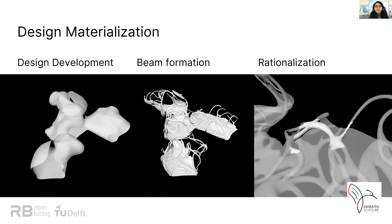To have a quick overview of the generation of the beams: we initially developed the base morphology using the architectural cross sections in Rhino. Then we use Grasshopper and Karamba to develop the beams using structural analysis on the base morphology. We further rationalize all the beams and select a small fragment from them to focus on for the next part of our research.